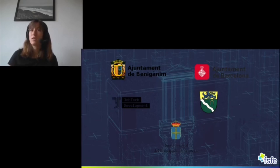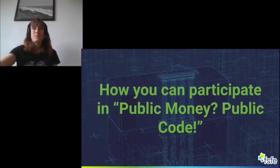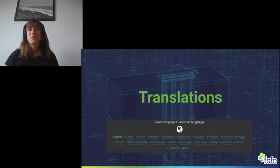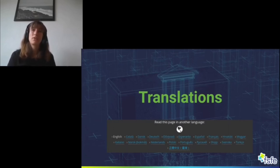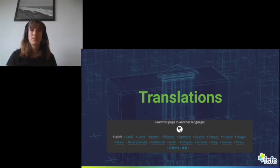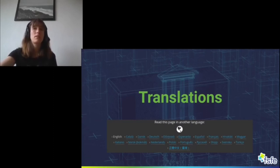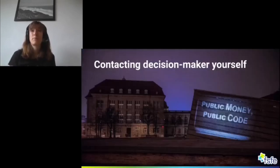So that was a quick overview of Public Money Public Code. Now the question is how you as an individual or as a group could participate in the campaign. For example, you could participate through translations. So far we have 20 translations of the open letter and more are always welcome, as it's always helpful to use the native language when approaching your local government or a local public administration.